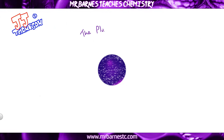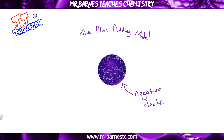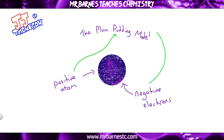He put this theory of electrons forward as the plum pudding model, where he suggested there were negative electrons and a positive atom. He said the positive atom was the pudding and the negative electrons were the plums.